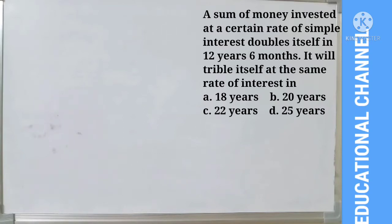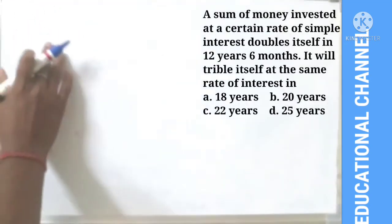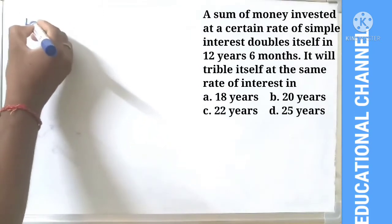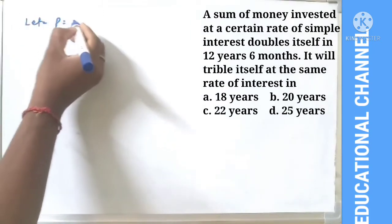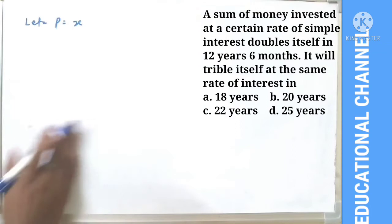A sum of money invested at a certain rate of simple interest doubles itself in 12 years 6 months. It will triple itself at the same rate of interest. Let P = x, then A = 2x.